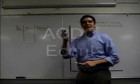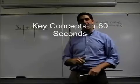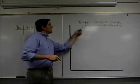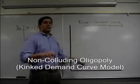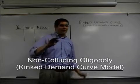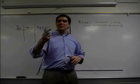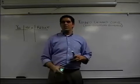Hey, how are you doing? This is Mr. Clifford with ACDC Econ, Key Academic Concepts in 60 Seconds. Today we're going to talk about oligopolies. We're going to talk about the kinked demand curve, which is a non-colluding oligopoly. They're not going to work with each other no matter what. We're going to explain that concept in 60 seconds. Here we go.